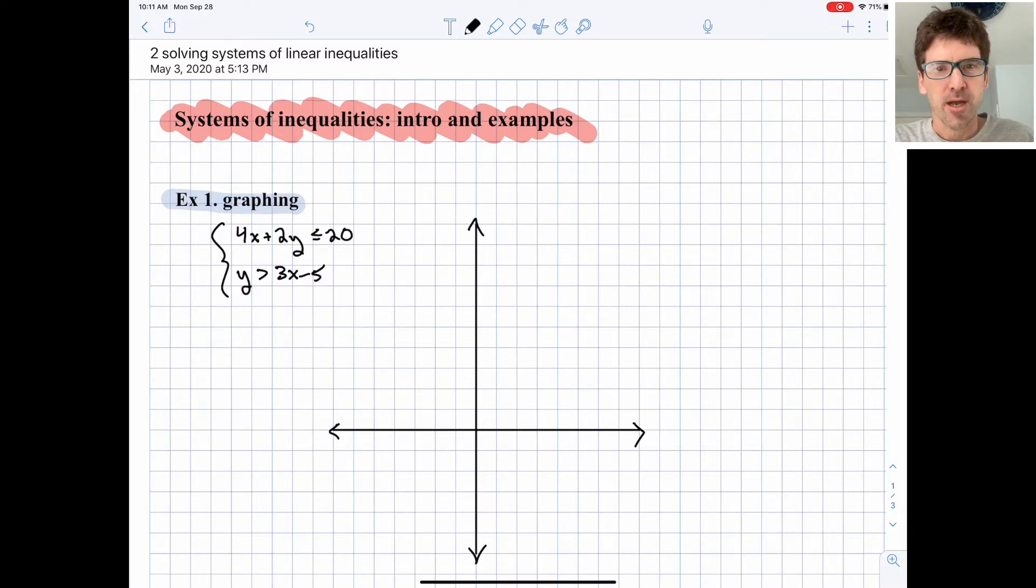By way of introduction, I want to explain that when we're solving a system of linear inequalities, we're looking for an overlapping region that works as a valid solution for both individual inequalities. We're not looking for a single intersecting point. We'll model that with our first example.